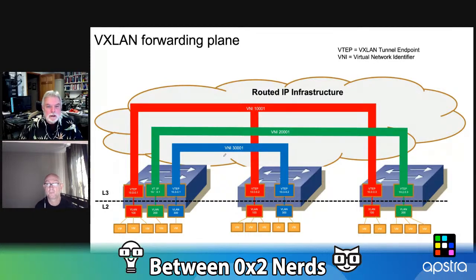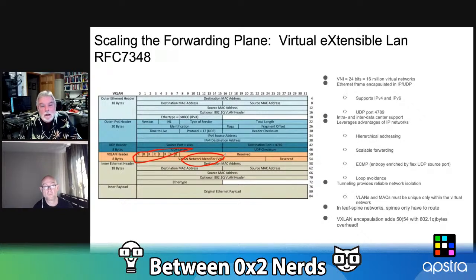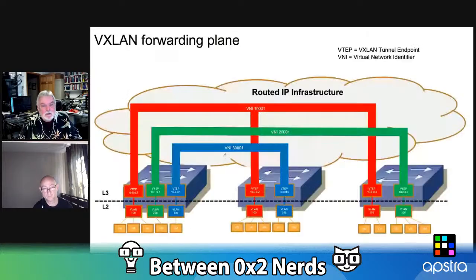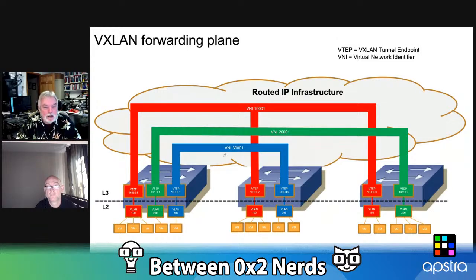Another thing to notice in that header — true of all overlay tunnel technologies — is that the payload and regular Ethernet header are encapsulated behind VXLAN, which is encapsulated behind UDP and IPv4, which is just saying: this is a tunneling technology. Looking at the VXLAN forwarding plane in the next slide, you can get a better idea of what we mean by tunneling — we're tunneling layer two traffic through a layer three network, differentiating the tunnels by VNIs.